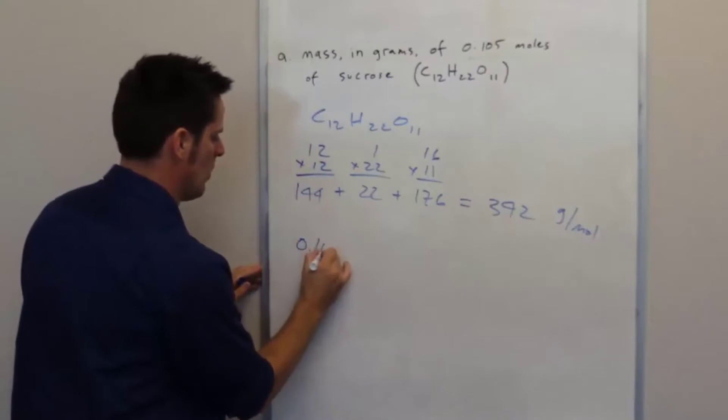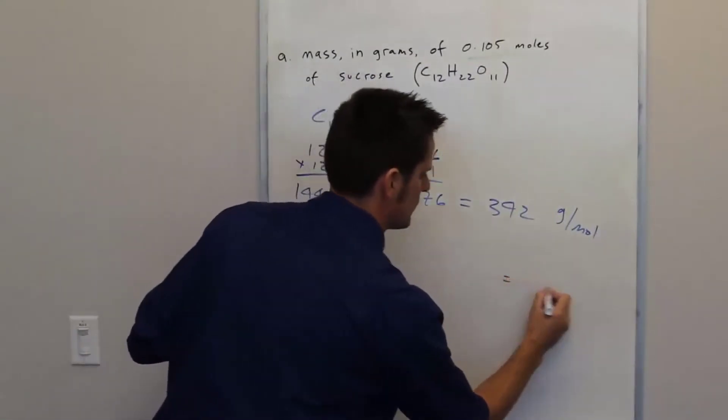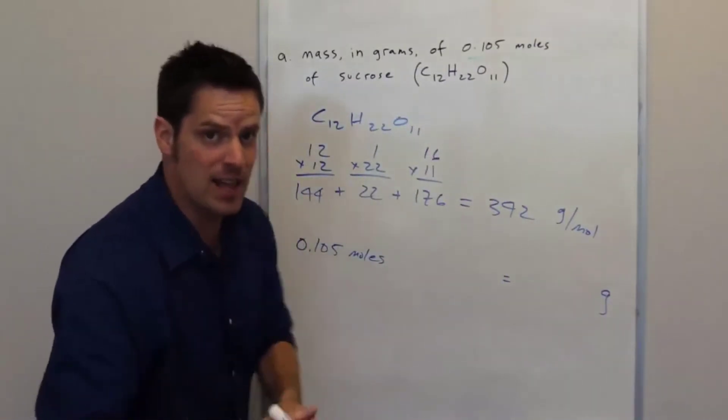Here's what I've got: 0.105 moles of sucrose. I want to turn it into grams of sucrose. How do I do that? Unit analysis.